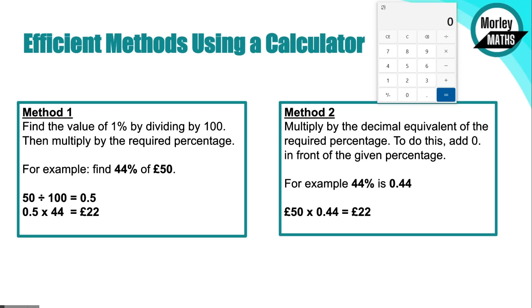Alternatively, what you want to do is turn your percentage into a decimal. If you've got a percentage and you want to turn it into a decimal, you're dividing it by 100. So here we would do 44 divided by 100, which is 0.44. And then we just times our total amount, so the 50 pounds by the 0.44.